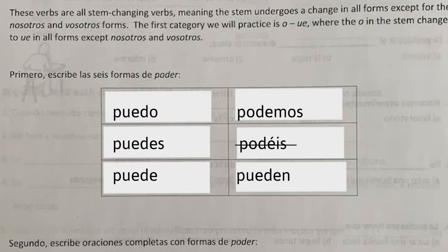Poder is an O to UE stem changing verb. Therefore, it alters the way we spell the verb depending on the subject. Notice the nosotros form has no stem change — it acts like a regular verb. I've given you the analogy of the nosotros police: when the police show up at a conjugating stem-change verb party, then nosotros acts normal.